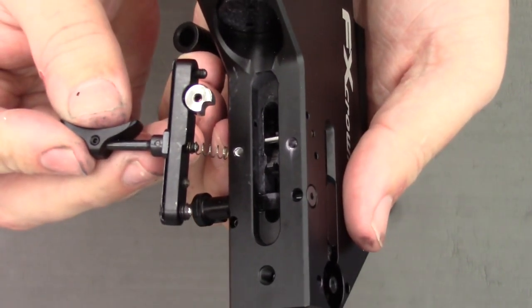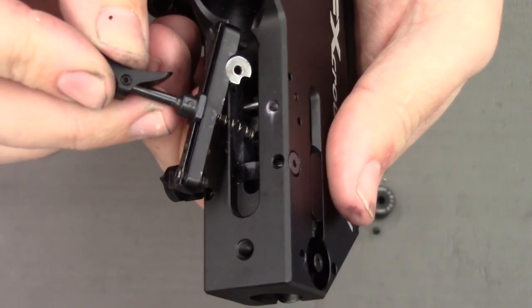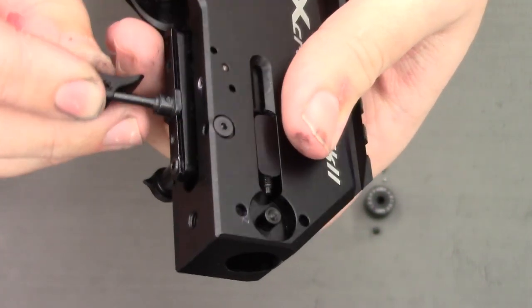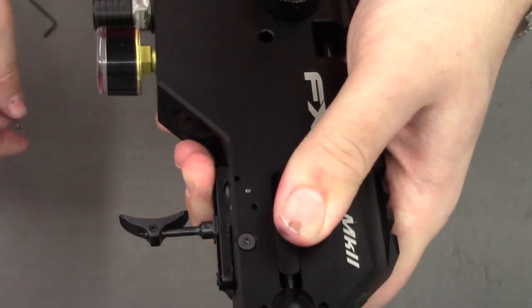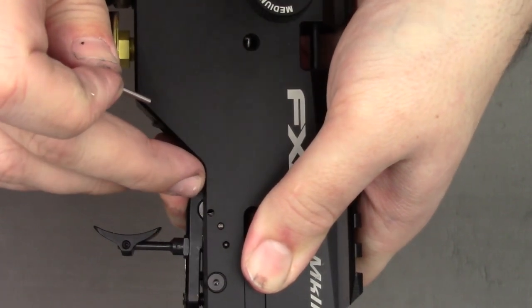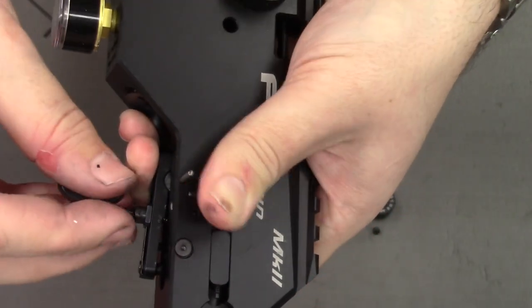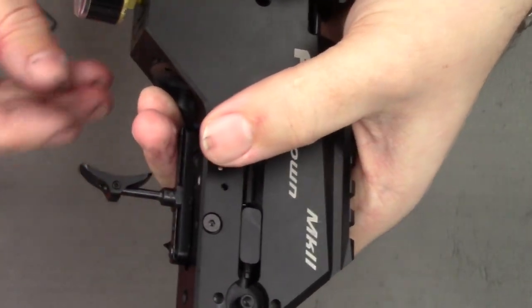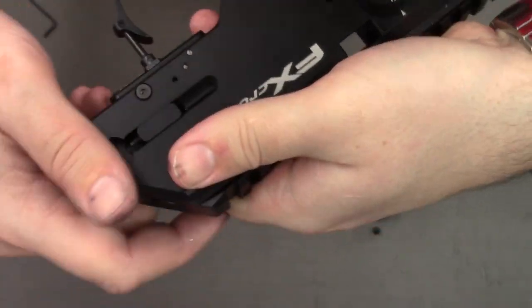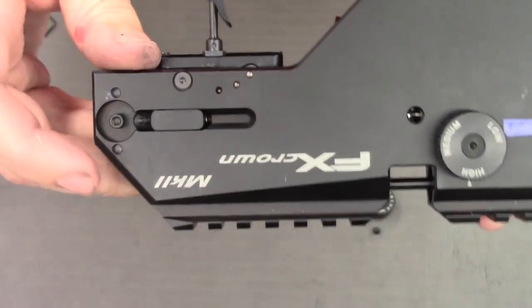Finally, take our trigger assembly. You need to get this end of the spring onto that little knob of the trigger sear down there. If you hold it in place you can line up in here that hole. Put your pin in and just wiggle it until it goes through. So that's the trigger all captive.